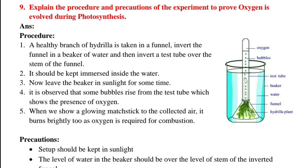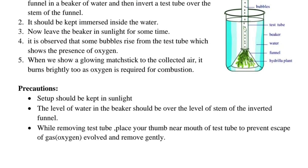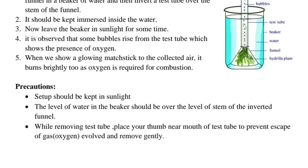Question number 9: Explain the procedure and precautions of the experiment to prove oxygen is evolved during photosynthesis. Answer — Procedure: 1. A healthy branch of hydrilla is taken in a funnel; invert the funnel in a beaker of water and then invert a test tube over the stem of the funnel. 2. It should be kept immersed inside the water. 3. Leave the beaker in sunlight for some time. 4. Bubbles rise from the test tube, showing the presence of oxygen. 5. When a glowing matchstick is shown to the collected air, it burns brightly, as oxygen is required for combustion. Precautions: The setup should be kept in sunlight. The level of water in the beaker should be above the level of the stem of the inverted funnel. While removing the test tube, place your thumb near the mouth of the test tube to prevent the escape of the evolved oxygen, and remove gently.